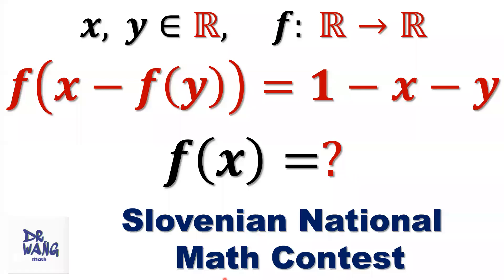Hello everyone, I'm Dr. Wang. Here is the question. x and y are real numbers. f is a function from the real number set to the real number set. Both domain and range are real numbers. f of x minus f of y equals 1 minus x minus y. What is the function f of x?